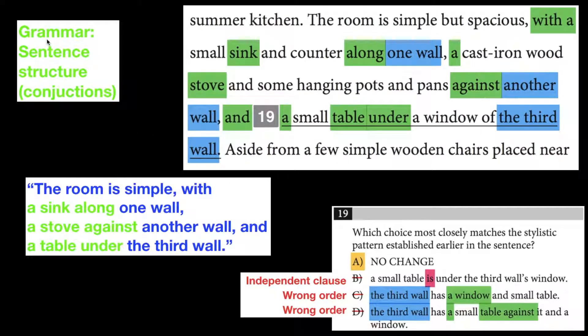Question number 19 is a grammar question on sentence structure and conjunctions. So the room is simple but spacious, and then you come across this really long sentence talking about all three walls.